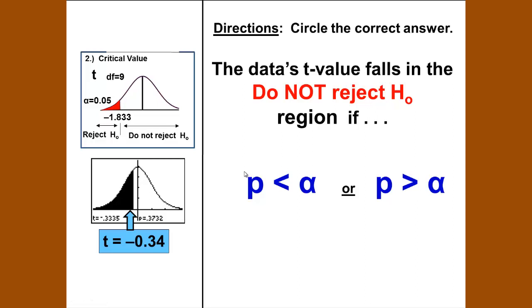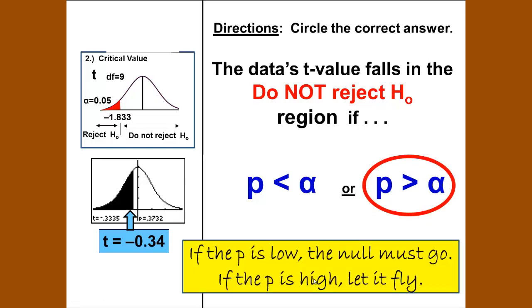Circle the correct answer. The data's t-value falls in the do not reject H₀ region if p < α or p > α. If p > α. If p is low, the null must go. If p is high, we let it fly. We do not reject. We do not make conclusions. We let it fly.